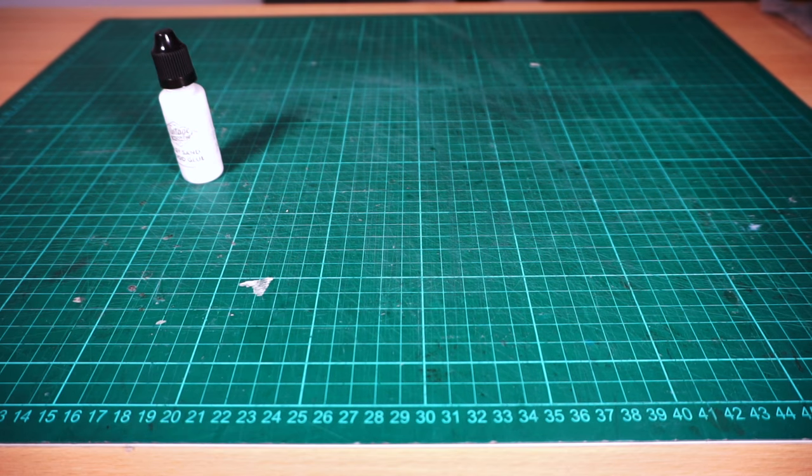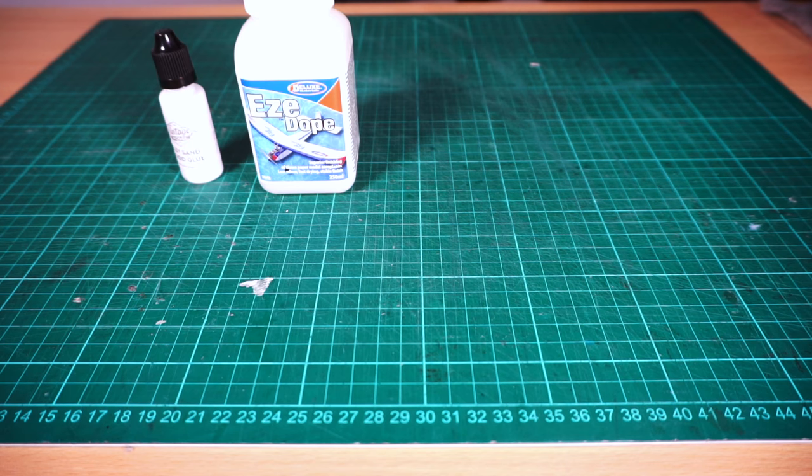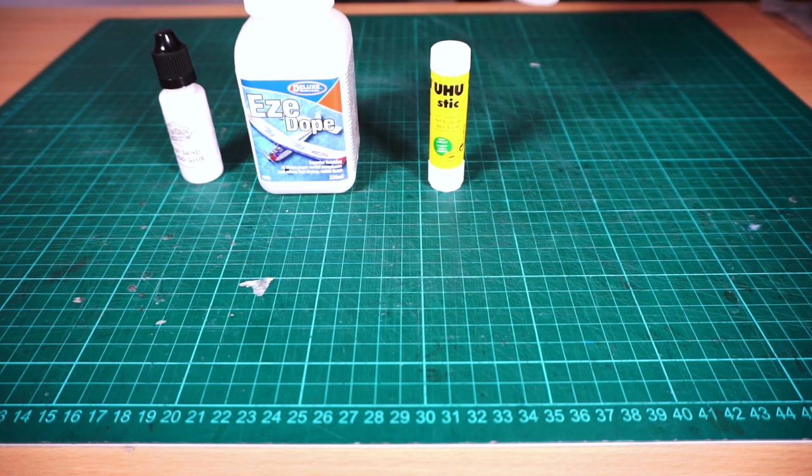First let's get our tools and materials. You'll need some PVA glue such as the stuff included in the kit, and you'll also need some easy dope which helps shrink and secure the covering later.